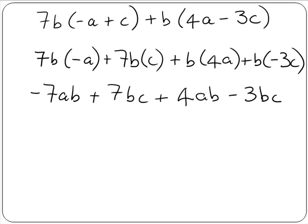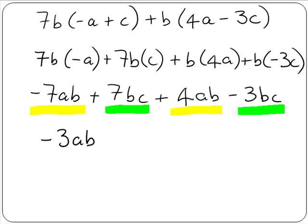When we write our letters in alphabetical order we can see that we have like terms, so we can add them together. We have ab terms: minus 7ab plus 4ab, which gives us minus 3ab. And we have bc terms: plus 7bc minus 3bc, which gives us plus 4bc. So our final answer is minus 3ab plus 4bc.